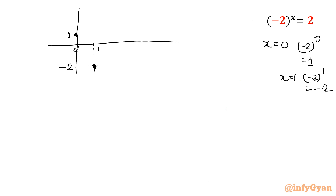Put x equal to 2: (-2)^2 = 4. Suddenly it reaches 4. Now put x equal to 3: again negative because 3 is an odd power, so it will be (-2)^3 = minus 8. And so on. Now I am drawing 2^x as a dotted curve to show the comparison.